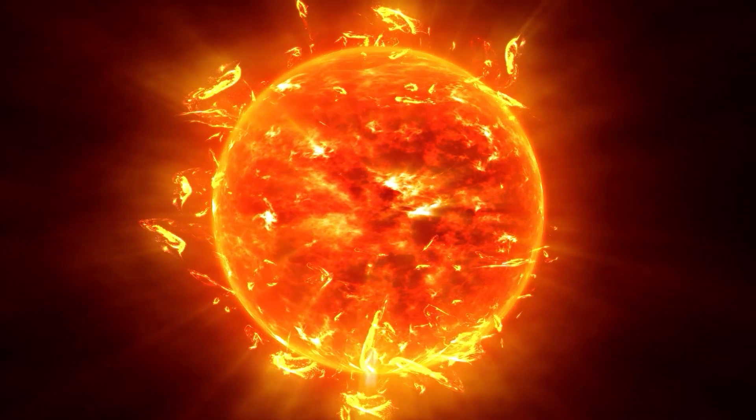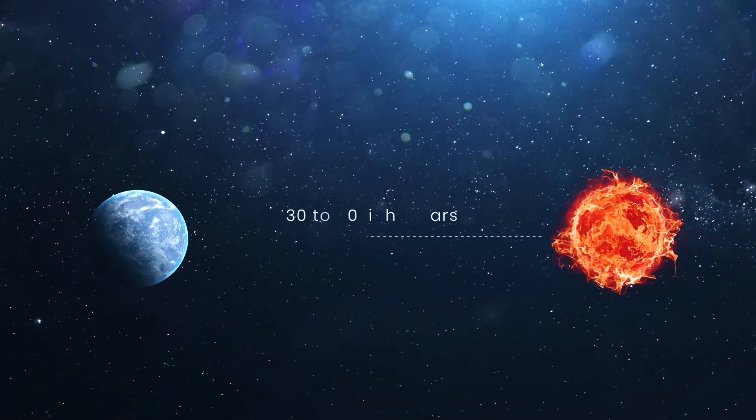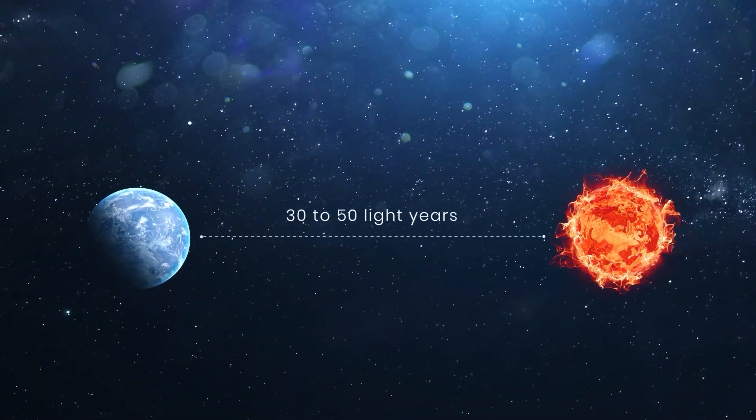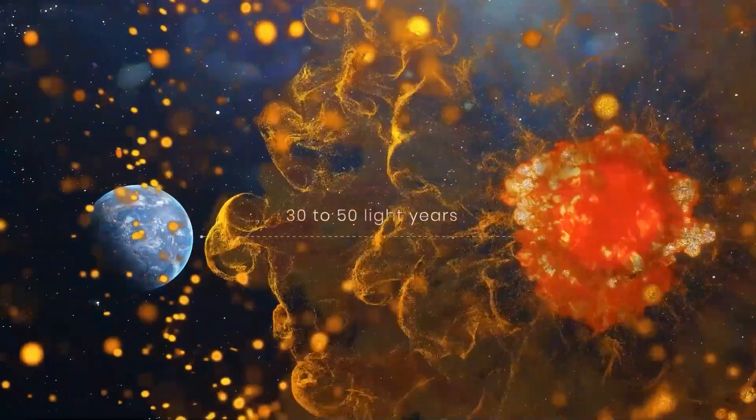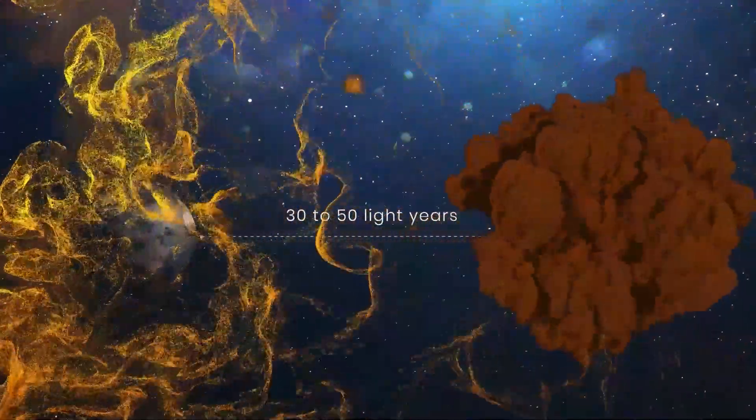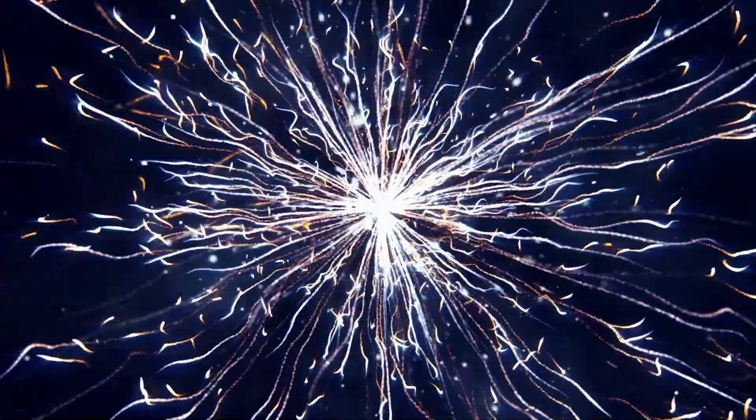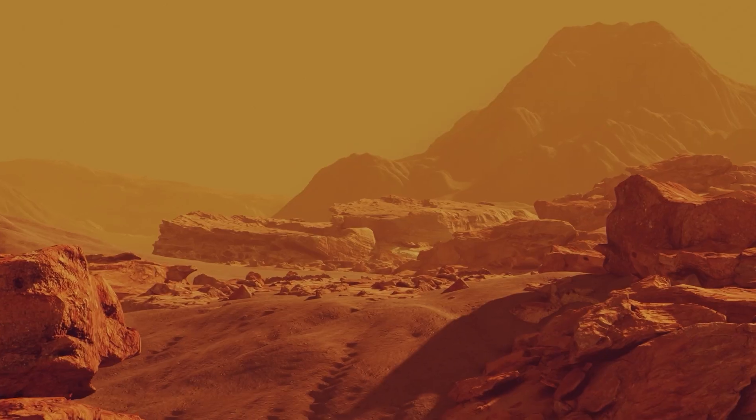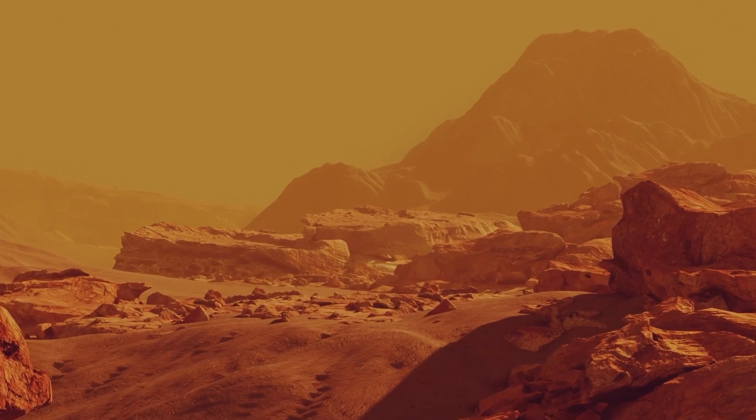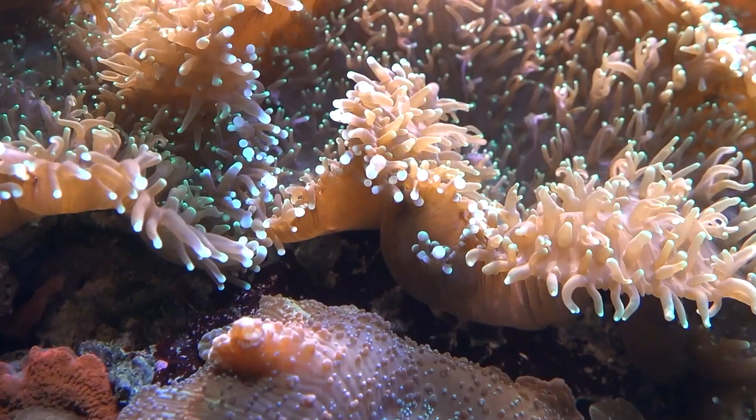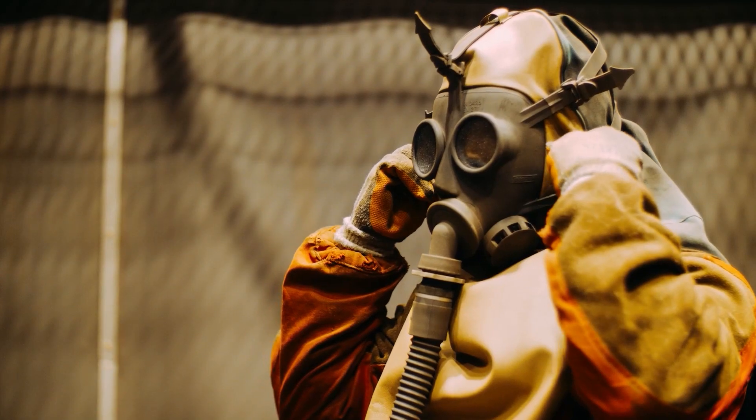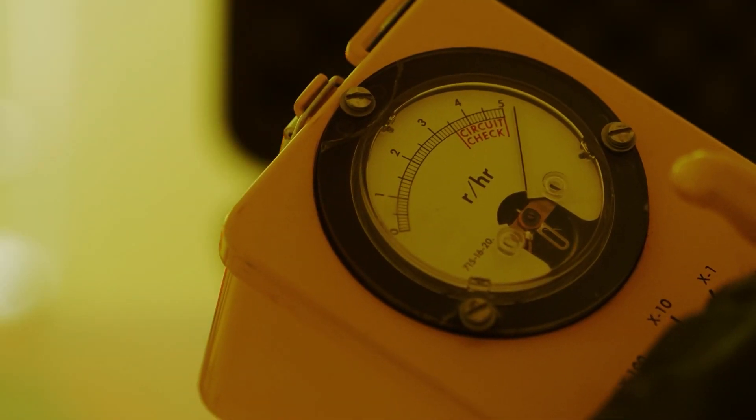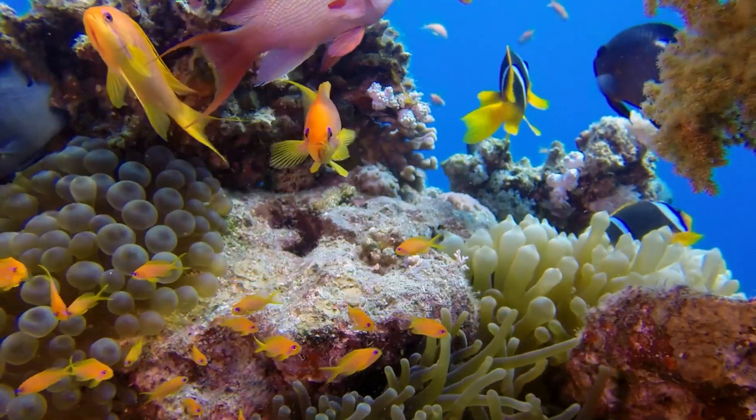If a star went supernova close enough to us, X-rays and more energetic gamma rays from the explosion would destroy the ozone layer that protects us from solar ultraviolet rays. It's possible that it could also ionize nitrogen and oxygen in the atmosphere, which would form huge amounts of smog-like nitrous oxide. Phytoplankton and coral reefs would be affected, and most organisms would be killed off by the radiation and severely deplete the base of the ocean food chain.